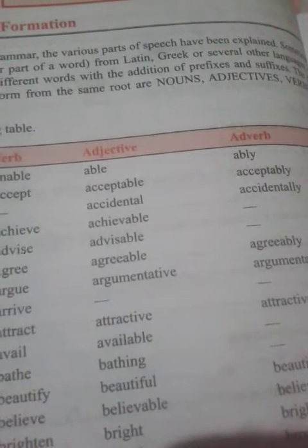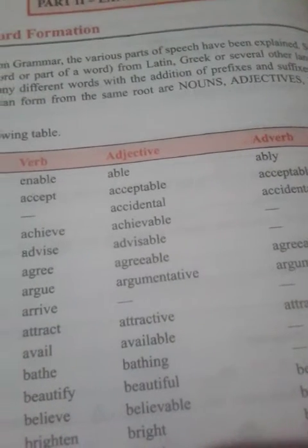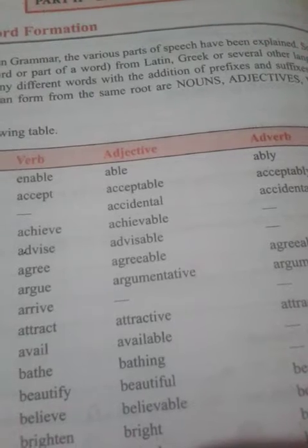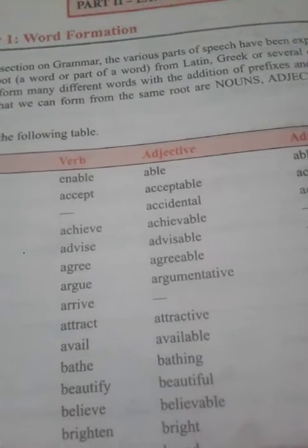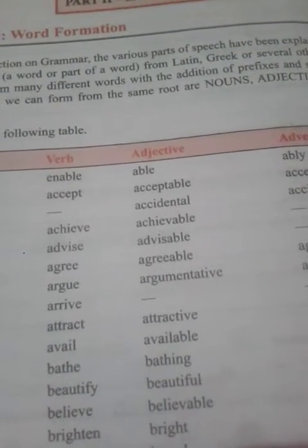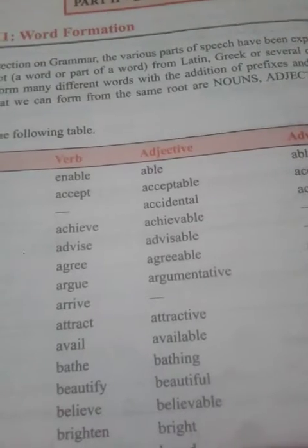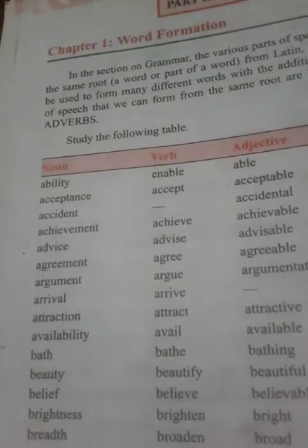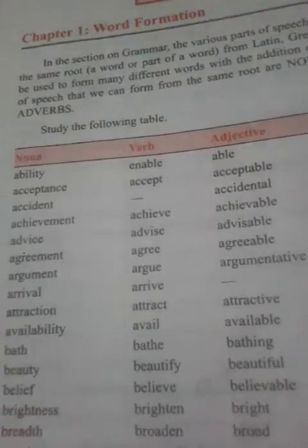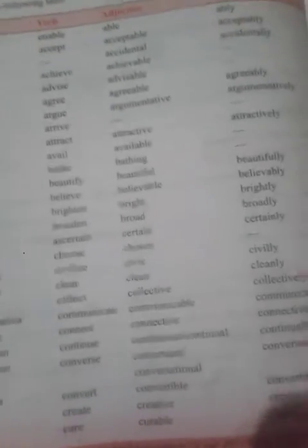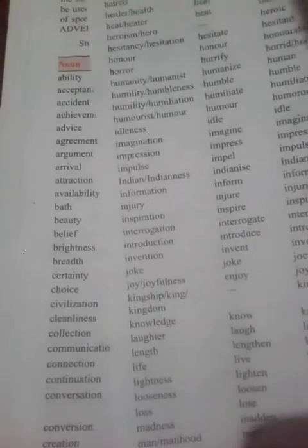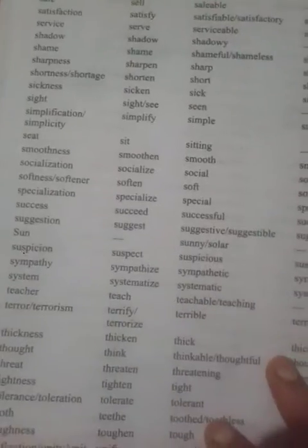Dear students, where there is a blank place, there is no word for that form. We have seen five nouns, verbs, adjectives, and adverbs so far. Here is the whole chart — altogether two pages. Go through these pages and study each and every word.